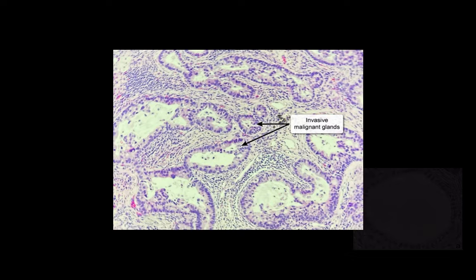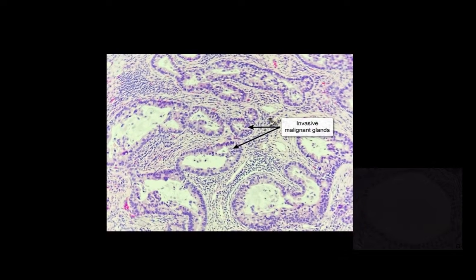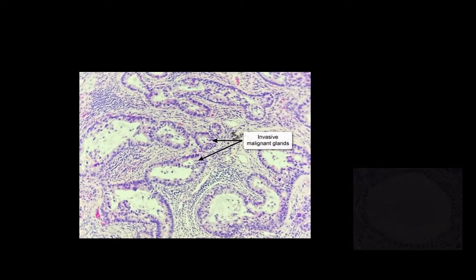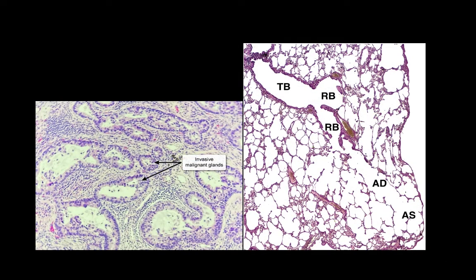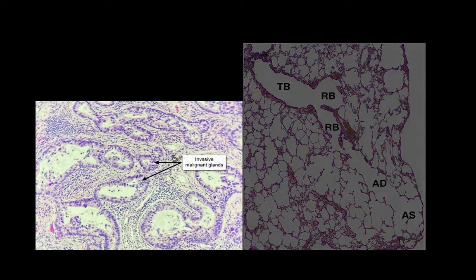This adenocarcinoma may not be easily identified as lung tissue, due to the invasive property and the advanced stage of the cancer. Look at the normal lung histology: we have terminal bronchioles, respiratory bronchioles, alveolar ducts, and alveolar sacs. We have air spaces that look empty, separated by alveolar septae.